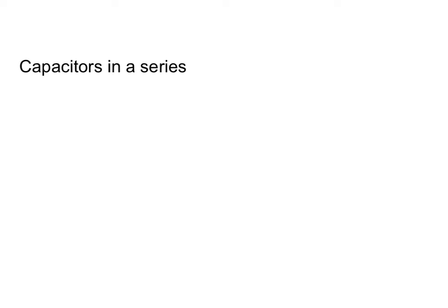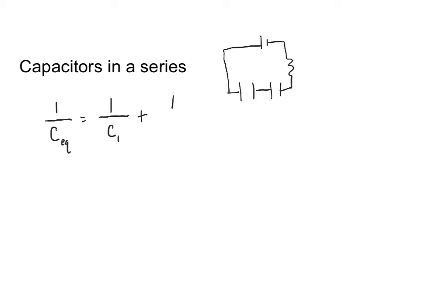Let's start by talking about what happens when you have capacitors in series. We're looking at a circuit with a resistor, two capacitors, and our battery. Whenever our capacitors are in series, the equivalent capacitance can be found by adding our capacitances as though we are adding parallel resistors. That means one over the equivalent capacitance of the series is equal to one over C1, plus one over C2, and so on for however many capacitors you have.